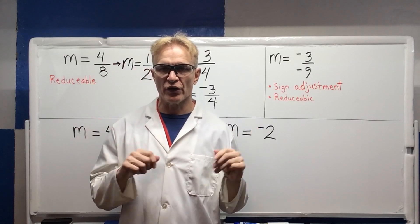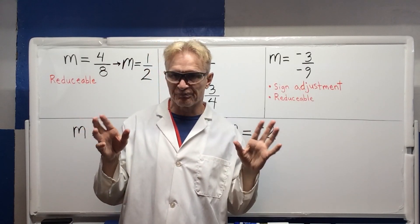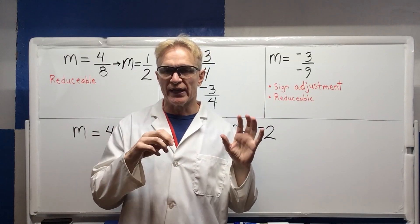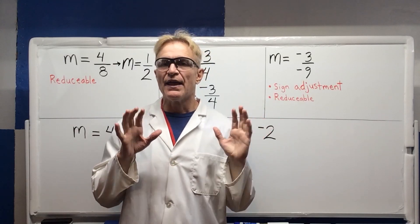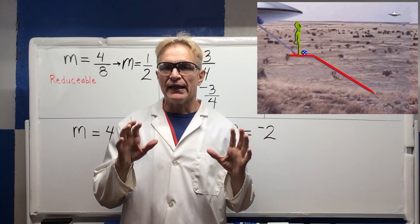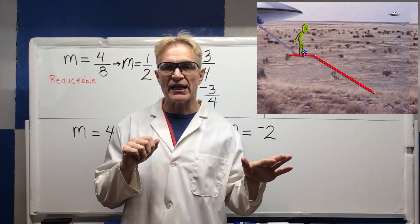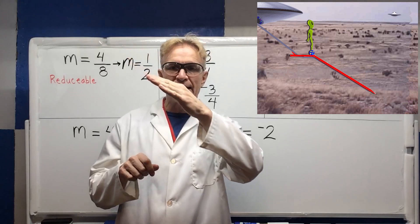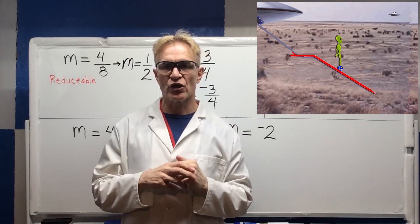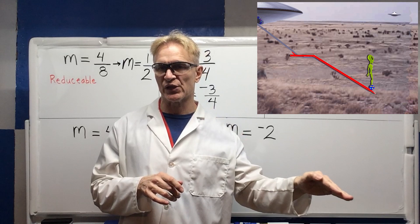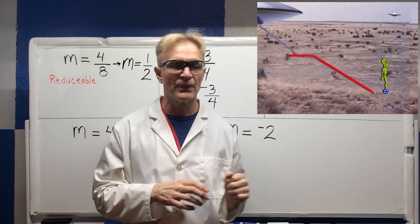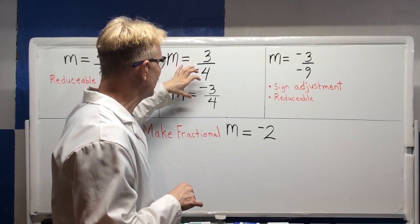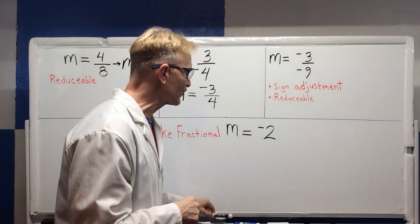Now I want to talk about the negative slope. If you watch the referenced video, you'll see that Geo, the alien, is moving left to right as we read a book, but he's moving downslope. A negative slope moves downward as we read left to right. That's our sign adjustment, and we talked about a negative slope.